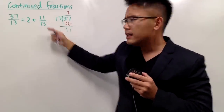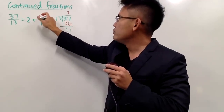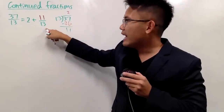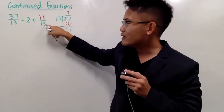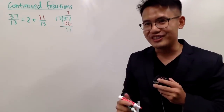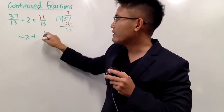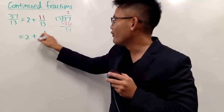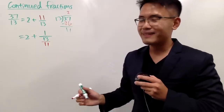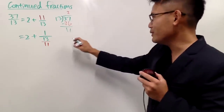And here we have a proper fraction, so it seems we cannot continue — but here is how you can do it. Look at the numerator: when you do this procedure, the numerator will be smaller than the denominator. But if you're willing to bring this down, you can get another improper fraction in the denominator and do long division again. We have 2 plus 1 over, and then 13 over 11 — which is another improper fraction, so you can do long division again.